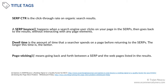Since we are discussing titles and CTRs, I would like to touch on concepts such as SERP CTR, SERP bounce rate, dwell time, and pogo sticking. SERP CTR is the click-through rate on organic search results. Search bounce rate is a bounce that happens when searchers click on a SERP result and go back to the initial SERP without interacting with the content on the page they clicked on — that is not necessarily a bad thing, depending on how much time the searchers spent on the website. Dwell time is the amount of time that a searcher spends on a page before returning to the SERPs. Pogo sticking is defined as going back and forth between a SERP and the web pages listed in the results.